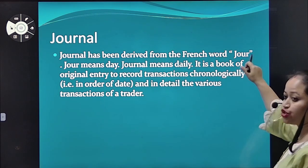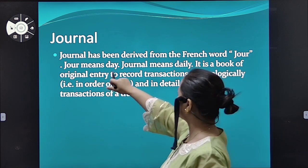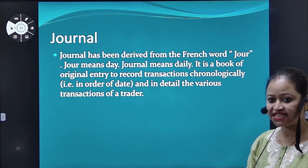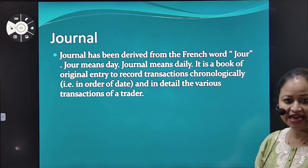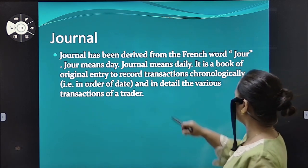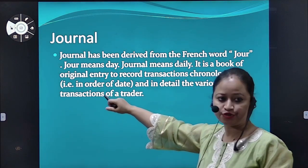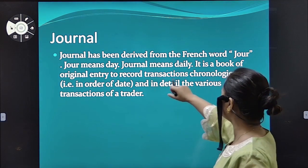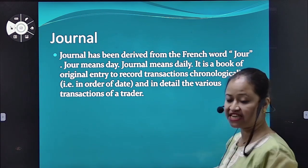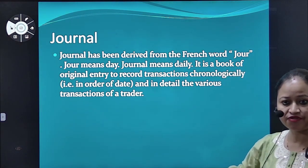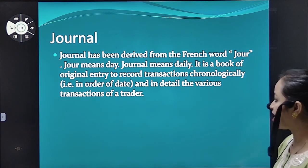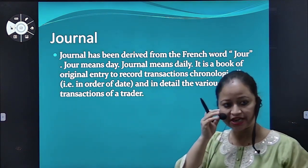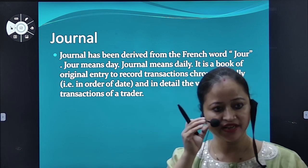The key elements of financial statements are: asset, expense, liability, capital, and revenue. The accounting equation is: asset equals capital plus liability, because in the balance sheet one side is all assets and the other side is capital and various liabilities. Journal has been derived from the French word 'jour' which means day or daily, because we give journal entries daily in order of date. Journal is called the book of original entry — it records transactions chronologically, meaning date-wise in detail.